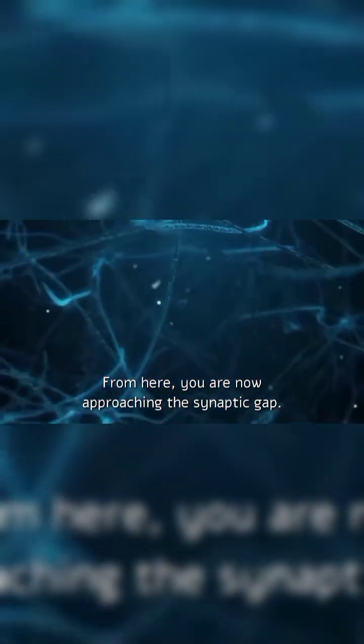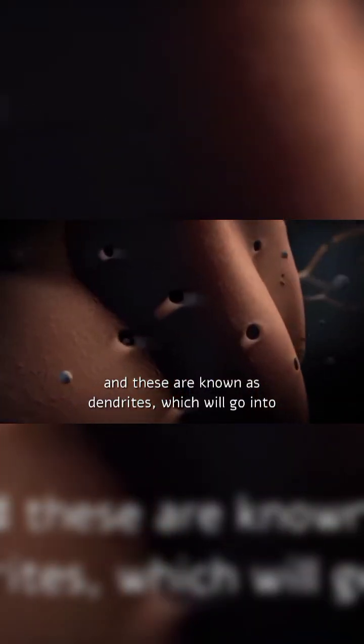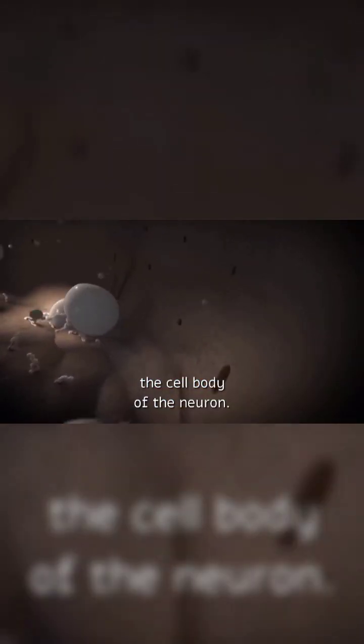From here, you are now approaching the synaptic gap. These gaps exist in conjunction with the next neuron, and these are known as dendrites, which will go into the cell body of the neuron.